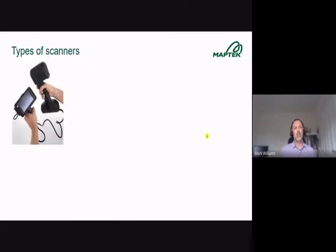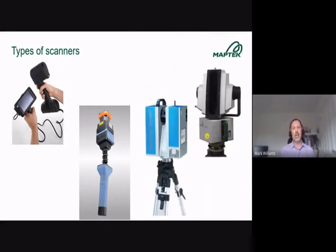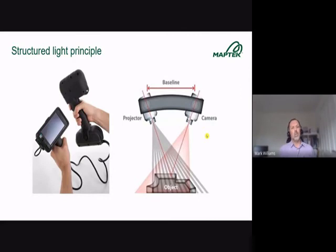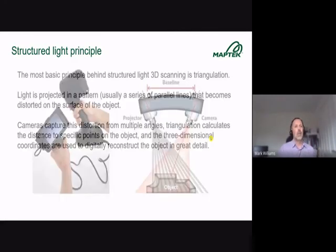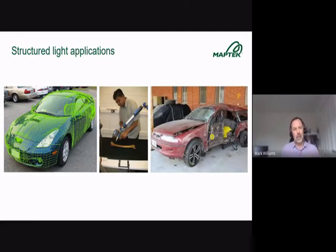A basic overview of the types of scanners is quite important, because if you Google LIDAR scanners you'll get all sorts of results — a variety of different shapes and sizes. First, we have structured light scanners. These are getting cheaper and more accessible. They have a camera and a light source that produces either crosshairs or a grid over a surface, and an algorithm uses that to triangulate and produce a detailed point cloud. Applications include scanning vehicles, boats, and aircraft for production, as well as archaeology and crime scene investigations.